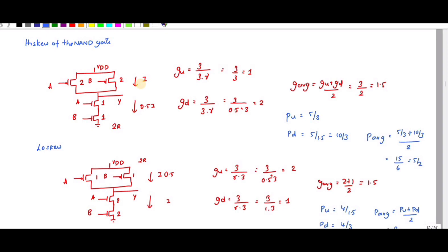Now, g_u is calculated using the 'a' value: 2 plus 1 is 3, divided by C_in of the inverter which is 3, into gamma. The gamma value represents i, which is 1, so g_u equals 1. Similarly, g_d is 3 divided by 3, with gamma equal to 0.5.